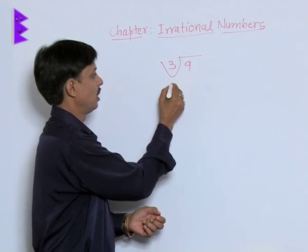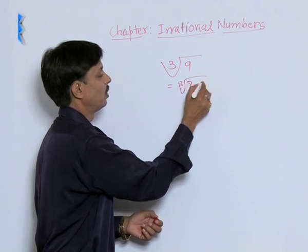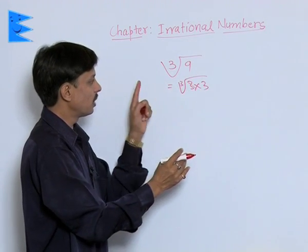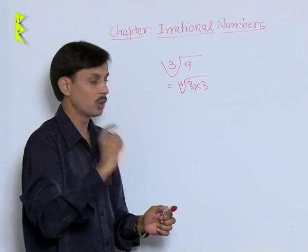This is cube root of 3 into 3, 3 into 3. Here order is 3. We need one more 3.